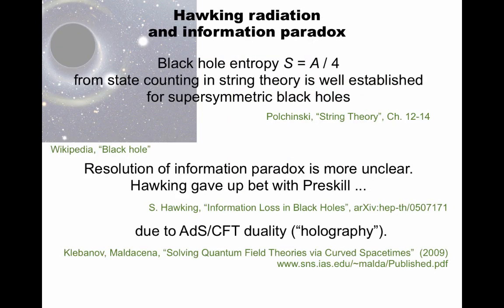I should emphasize that some people like Nima Arkani-Hamed seem to occasionally disagree with these statements here. How about the Hawking radiation information paradox? The entropy of a black hole given by the Bekenstein-Hawking formula can be computed from state counting in string theory. This works mainly for supersymmetric black holes to get the right coefficient, and this is explained in textbooks. The resolution of the information paradox is more unclear. Hawking gave up his bet with Preskill, if you know about that, due to anti-de Sitter conformal field theory duality, also known as holography.